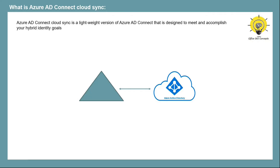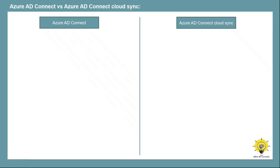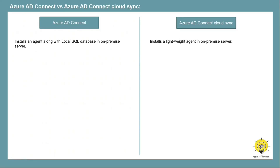There are lots of differences between Azure AD Connect and Azure AD Connect Cloud Sync. When we install Azure AD Connect, it installs an agent on the on-premise server and in Azure Active Directory along with a local SQL database. But in case of Cloud Sync, a lightweight agent is installed on the on-premise server. In Azure AD Connect, sync runs every 30 minutes by default, but in Azure AD Connect Cloud Sync, sync runs every two minutes.